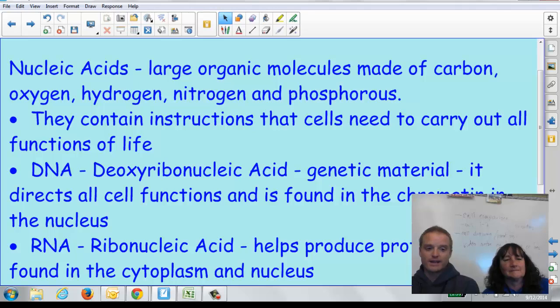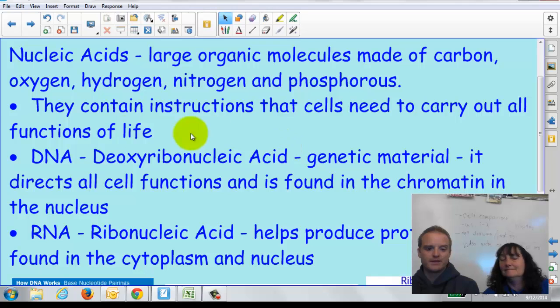Next up, guys, we have our fourth one. It's our final kind of organic compound we're going to talk about, and it's nucleic acids. And these are large organic molecules made of carbon, oxygen, hydrogen, nitrogen, and phosphorus. They contain the instructions that the cells need to carry out their function. So we've talked about those parts before, and that's the DNA. And there's that big word I'm going to go for. Deoxyribonucleic acid. Very good. So DNA.